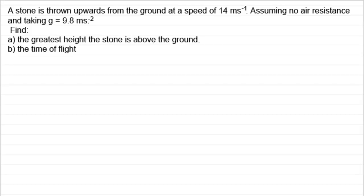Hi, I've got another example here in my series on vertical motion which can offer up something different to the previous tutorials that we've looked at. So what we've got here is a stone is thrown upwards from the ground at a speed of 14 meters per second, and assuming no air resistance and taking g to be 9.8 meters per second per second, we've got to find the greatest height the stone is above the ground and in part b the time of flight.